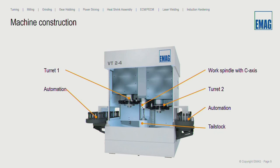Here you see the machining area with the front doors removed. You have two turrets — one on the left side, one on the right side — and the work spindle with the C axis in the middle. On the left and right side, normally the automation. On the bottom, a tailstock. A steady rest is also possible within these machines.